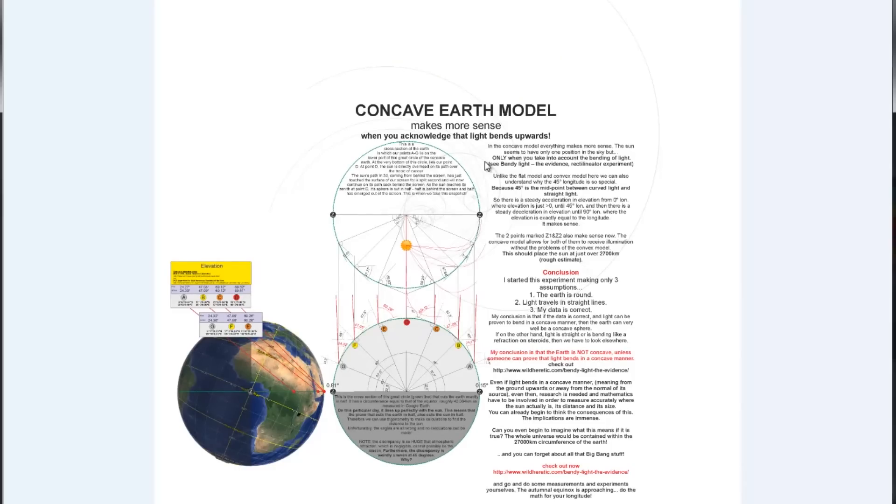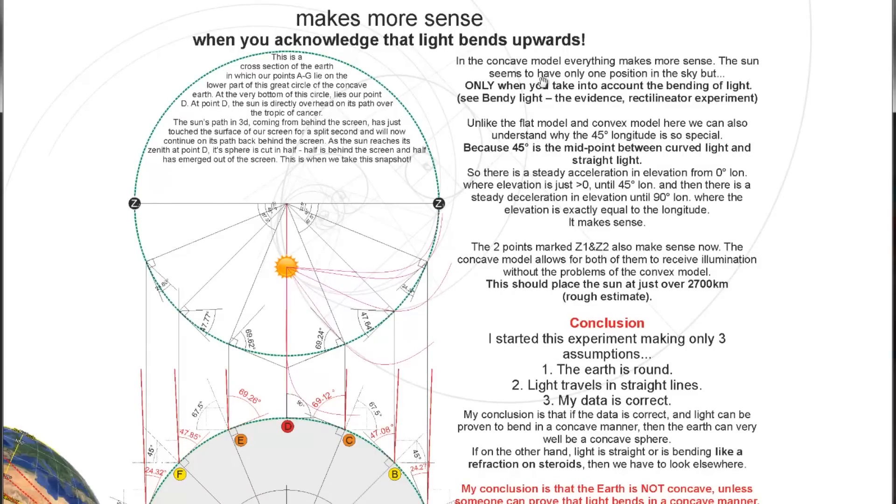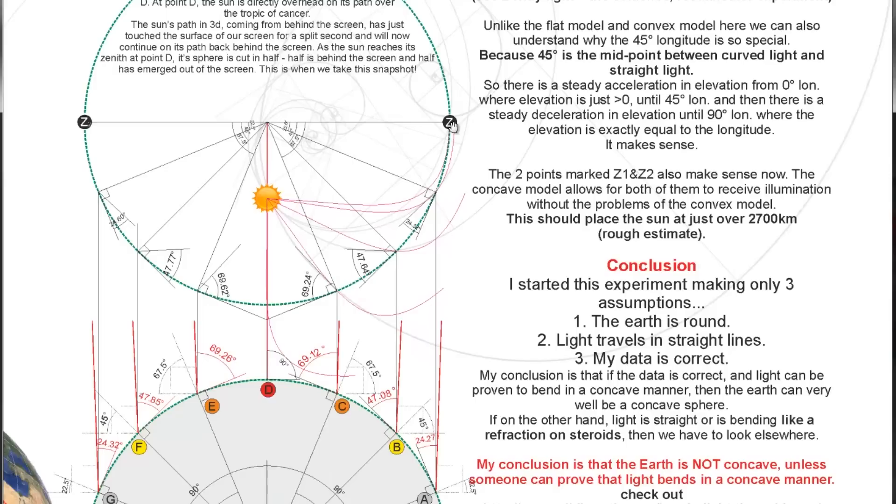There is another model. It's called the concave Earth model, which makes more sense when you acknowledge the light bends upwards. In the concave model, everything makes more sense. The Sun seems to have only one position in the sky, but only when you take into account the bending of light. Unlike the flat model and convex model, here we can also understand why the 45 degree longitude is so special, because 45 degrees is the midpoint between curved light and straight light. So there is a steady acceleration in elevation from 0 degrees longitude, where elevation is just over 0, until 45 degree longitude. And then there is a steady deceleration in elevation until 90 degree longitude, where the elevation is exactly equal to the longitude. It makes sense. The points marked Z1 and Z2 also make sense now. The concave model allows for both of them to receive illumination without the problems of the convex model, where we can find the Sun. This should place the Sun at just over 2,700 kilometers, as a rough estimate.